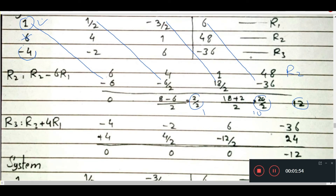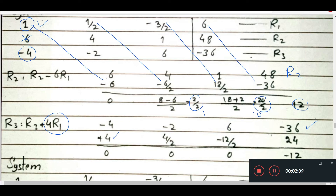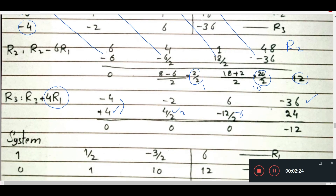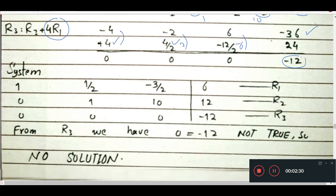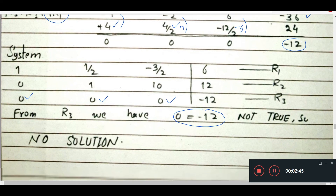Next, for R3: minus 4 becomes 0. We use 4 times R1 added to R3. 4 times 1 is 4, half times 4 is 2, negative three-halves times 4 is negative 6, and 4 times 6 is 24. After all operations, we get 0 equals negative 12, which is not possible — that is not true. Therefore, this system has no solution.